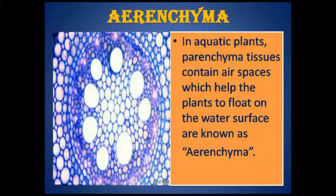What is aerenchyma? In aquatic plants, the parenchyma tissues contain air spaces. These air spaces are empty, and with the help of the air spaces, the aquatic plants float on the water surface. Since these parenchyma tissues have air spaces, they are called aerenchyma. Aerenchyma are special parenchyma tissues present only in aquatic plants, which help the plants to float on the water surface.